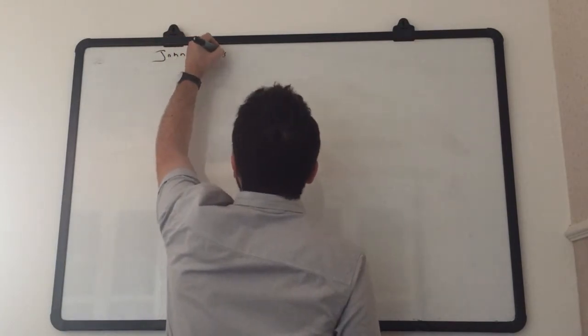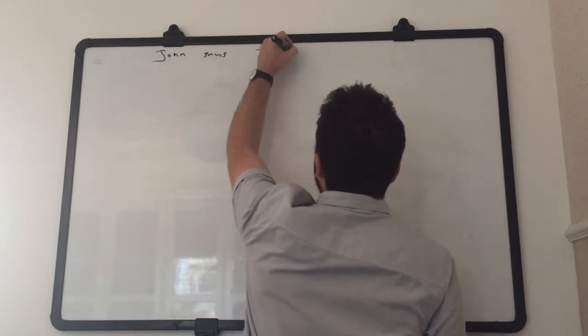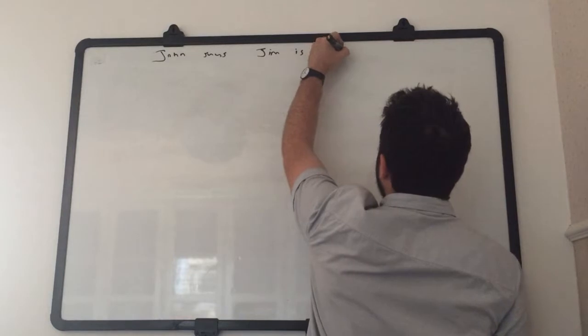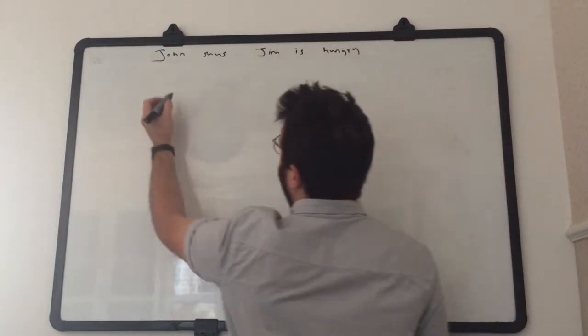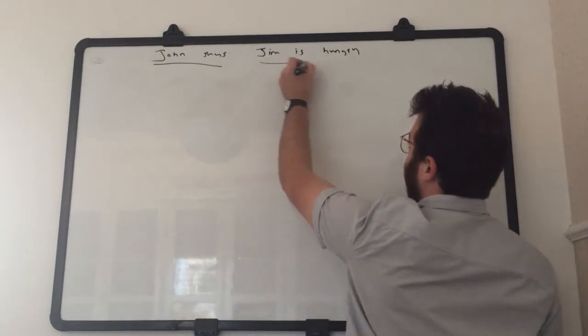John says Jim is hungry. So we have a main clause, John says, and a dependent clause, Jim is hungry.